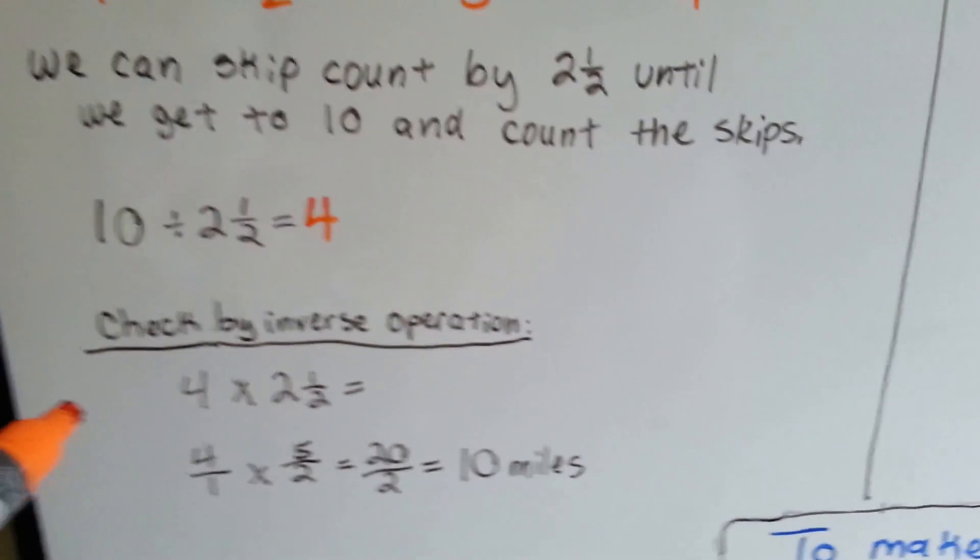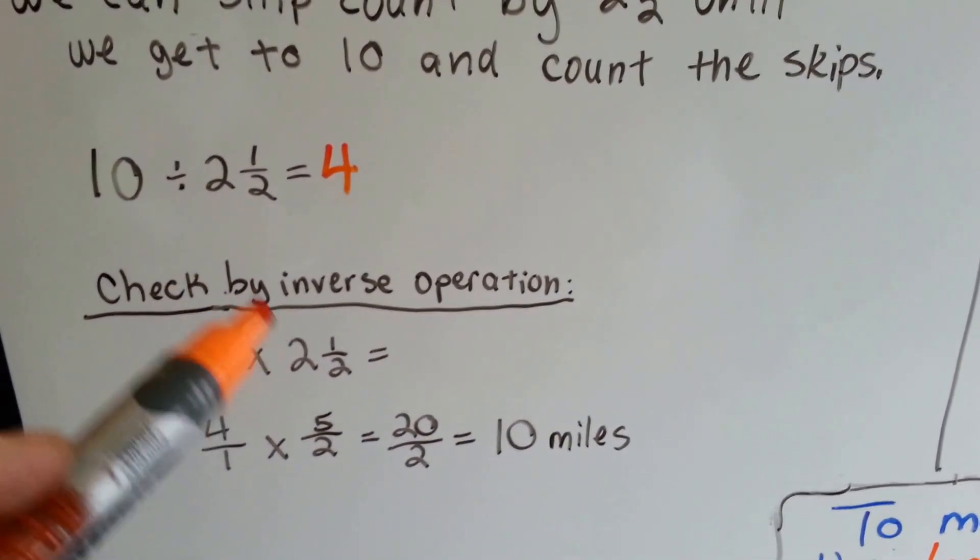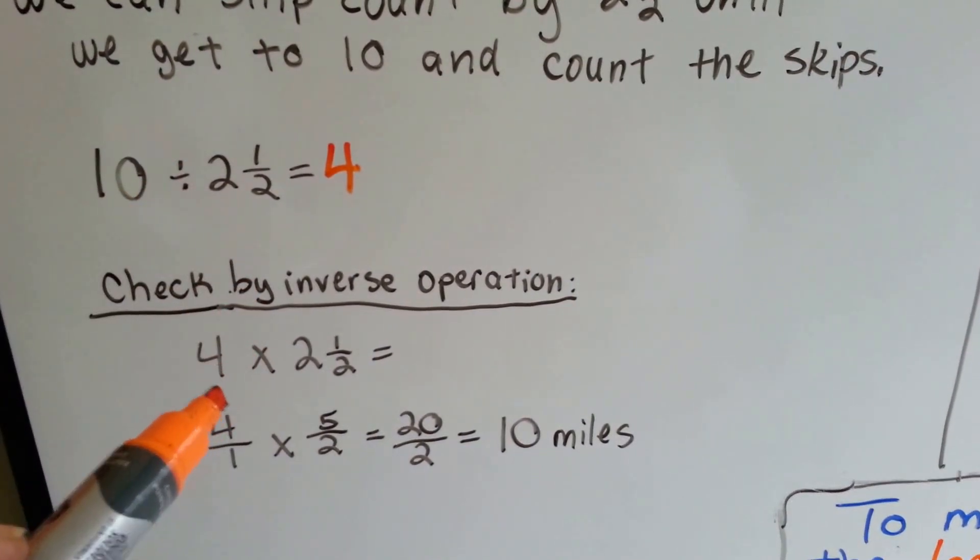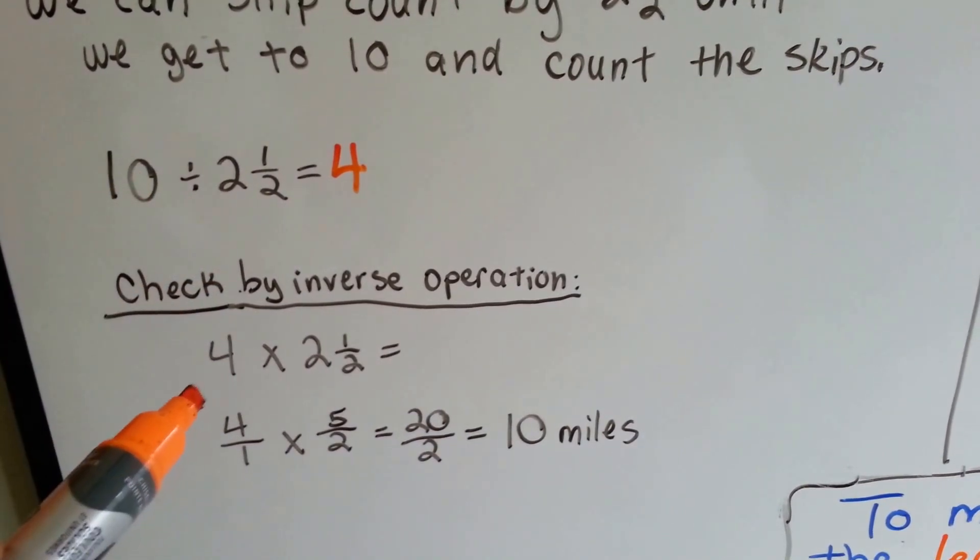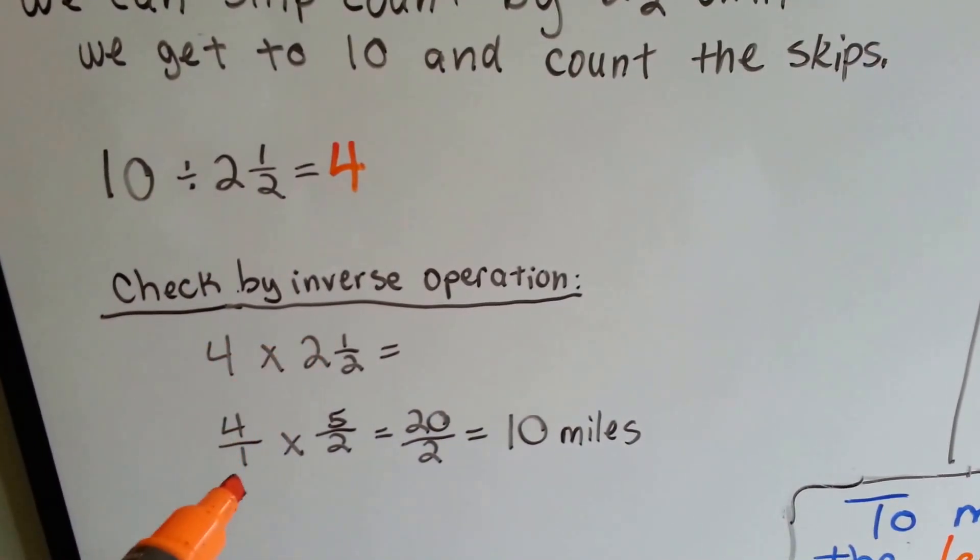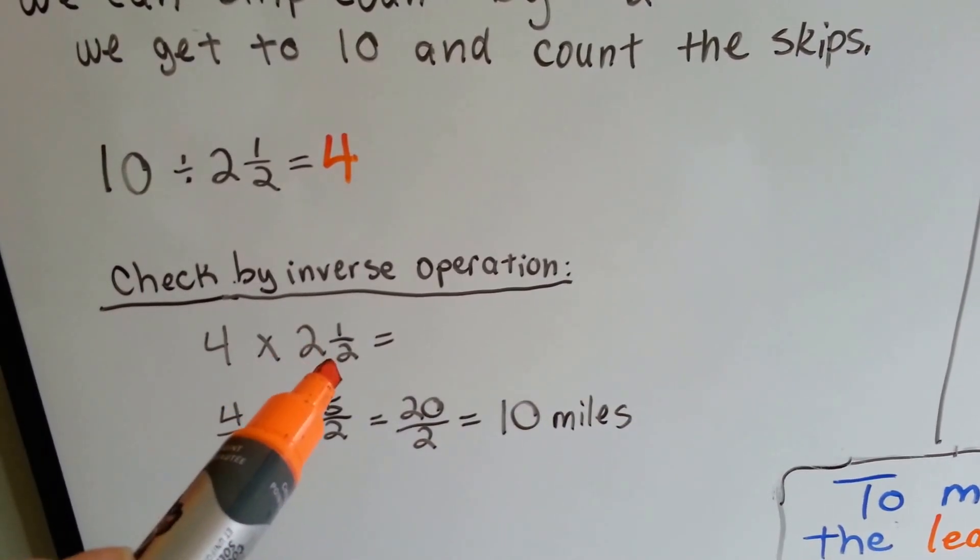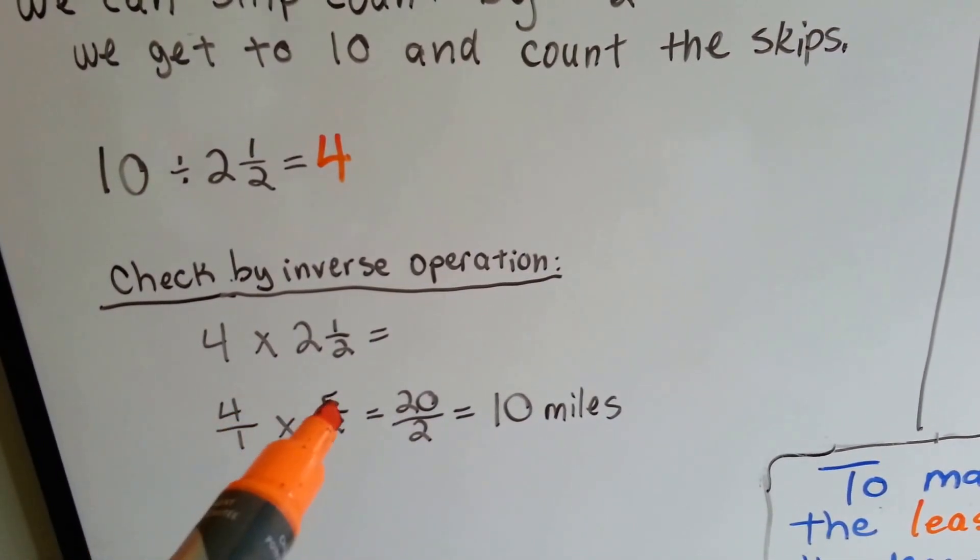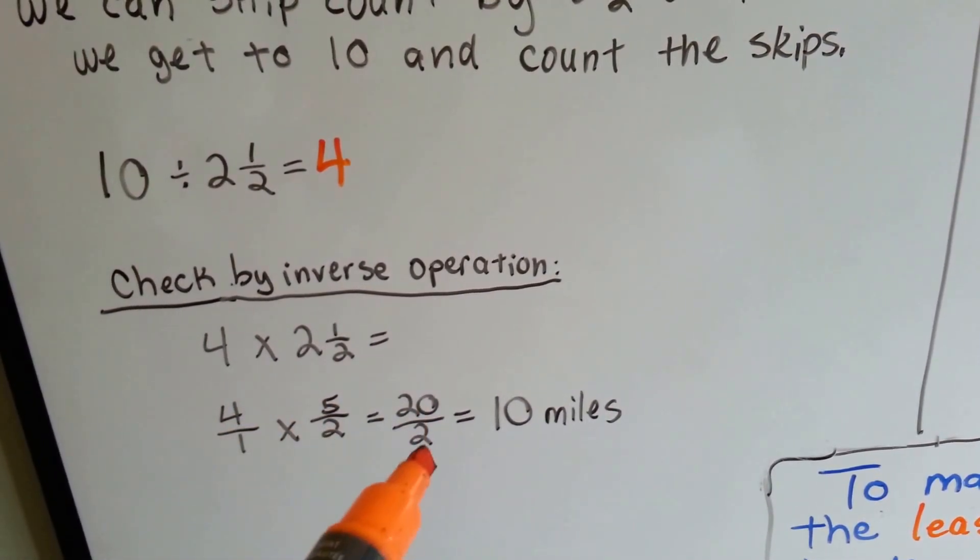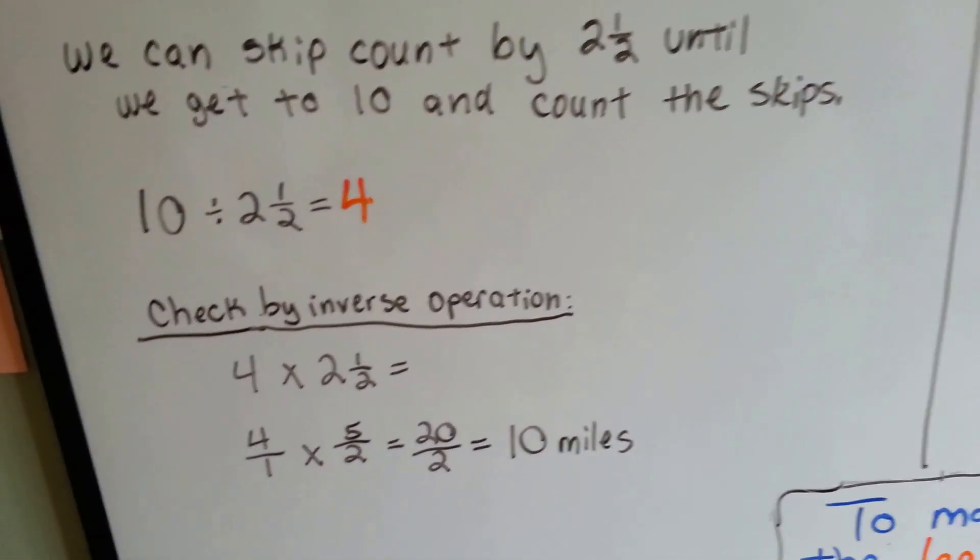We can check by inverse operation, because inverse means opposite, and the opposite of division is multiplication. So we're going to do 4 times 2 1/2, and if it equals 10, we did it right. That's 4 over 1 times 5/2. 4 times 5 is 20, 1 times 2 is 2. 20 over 2 is equal to 10 miles. We did it correctly.